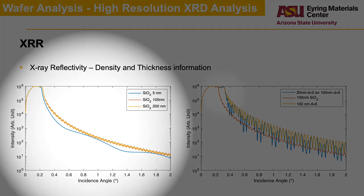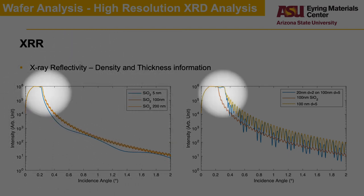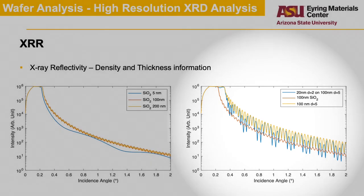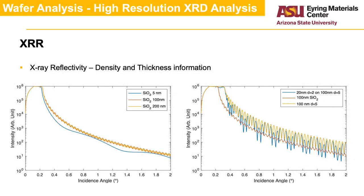As we can see on the left plot, the thicker the film, the higher the frequency of the oscillations. The density of the material is defined by the critical angle — the angle where the signal drops off. The higher the angle, the denser the material is. The right plot illustrates the change in the drop-off angle with density for two films a hundred nanometers in thickness. The blue line illustrates the shape of the pattern for a multi-layer sample, where the period resulting from the two thicknesses is clearly apparent — one has a lower frequency and one has a higher frequency for the thicker film. The more films are present, the trickier the analysis becomes.